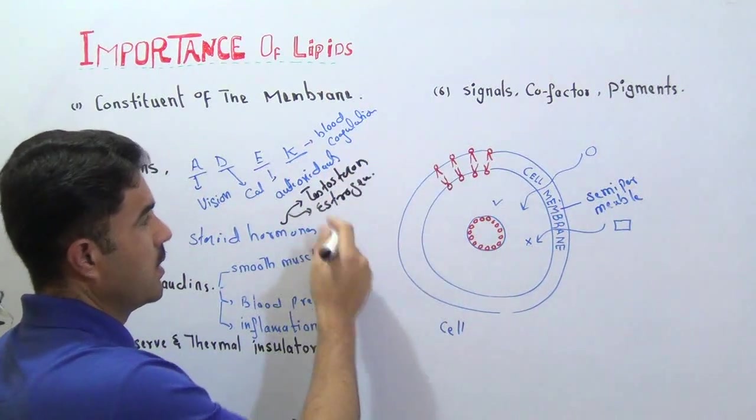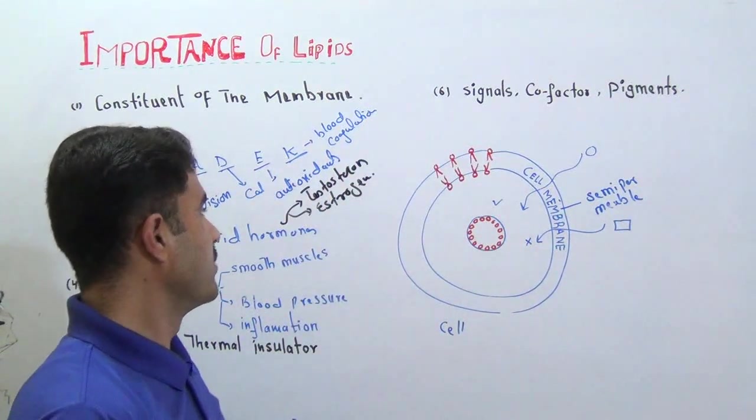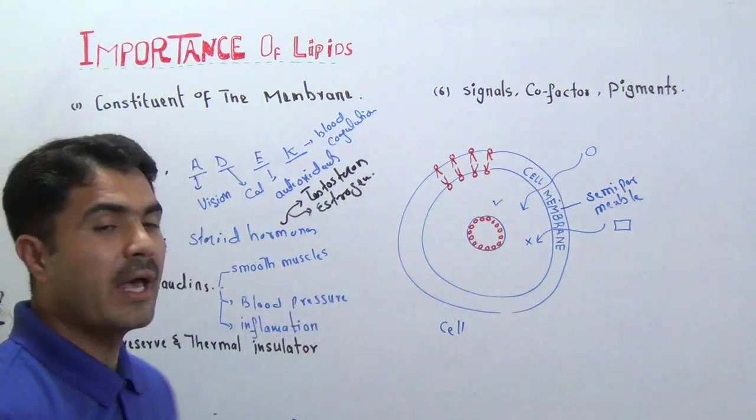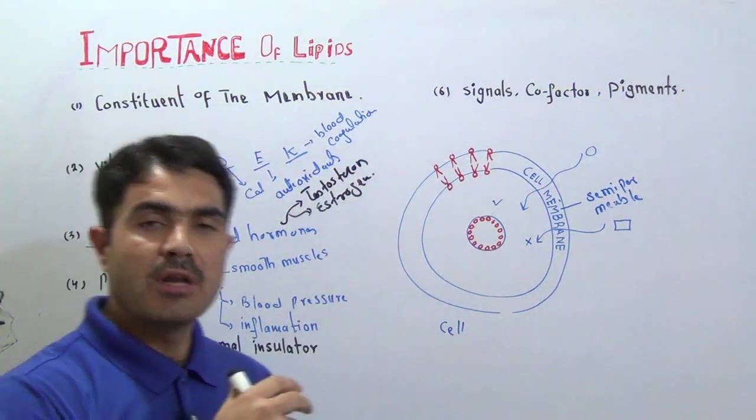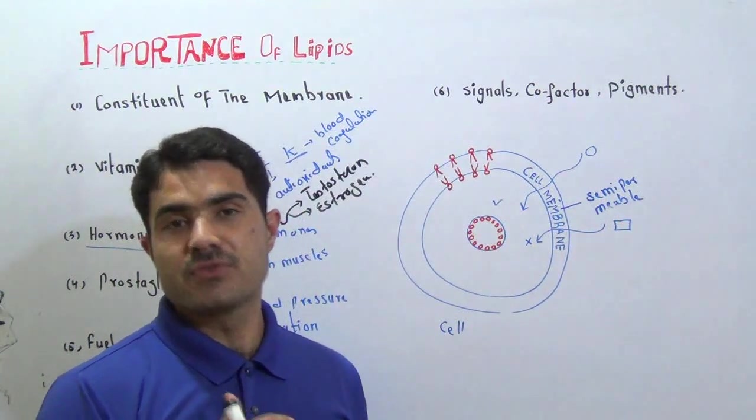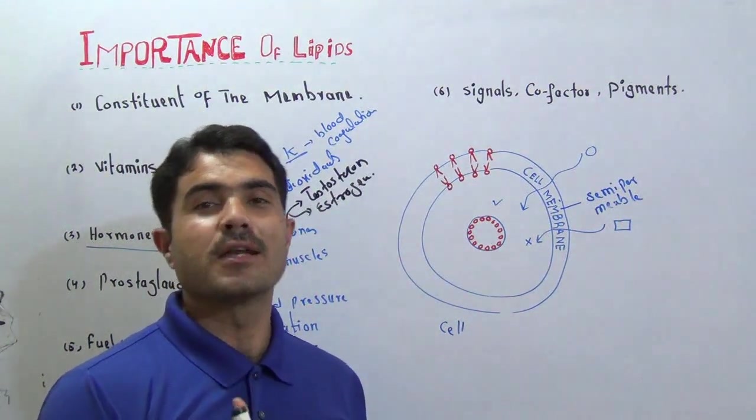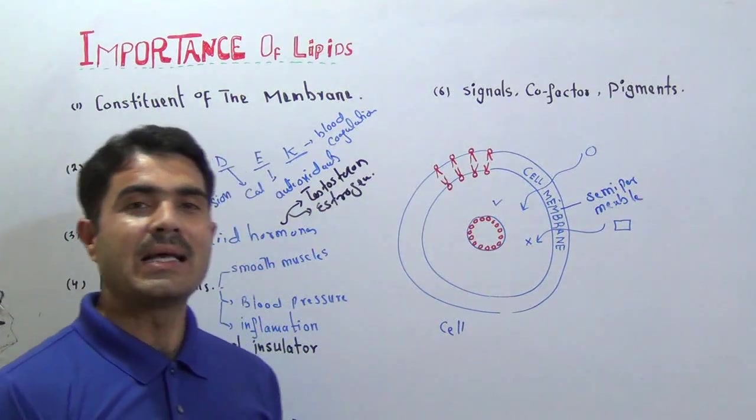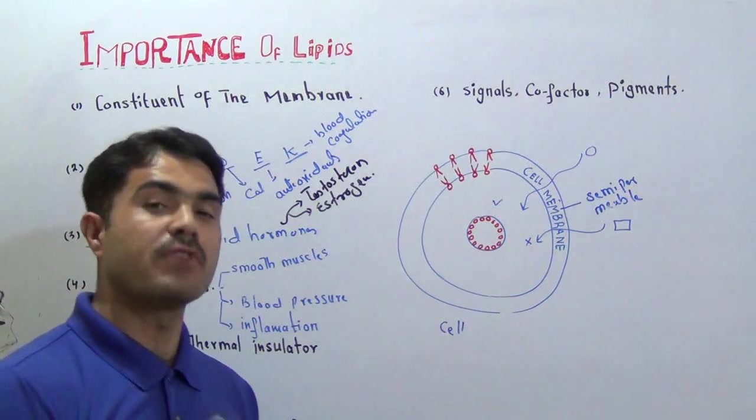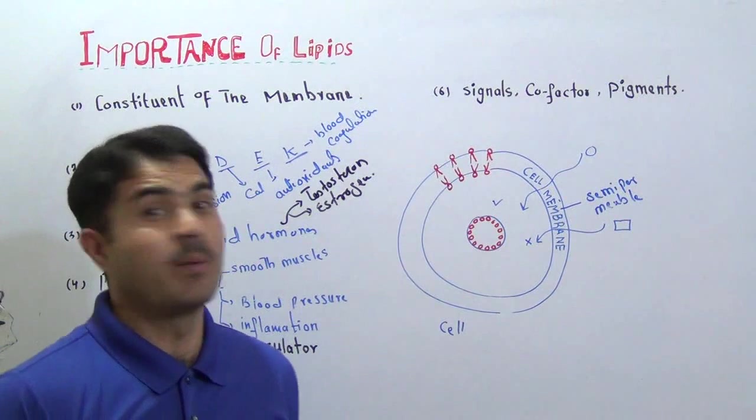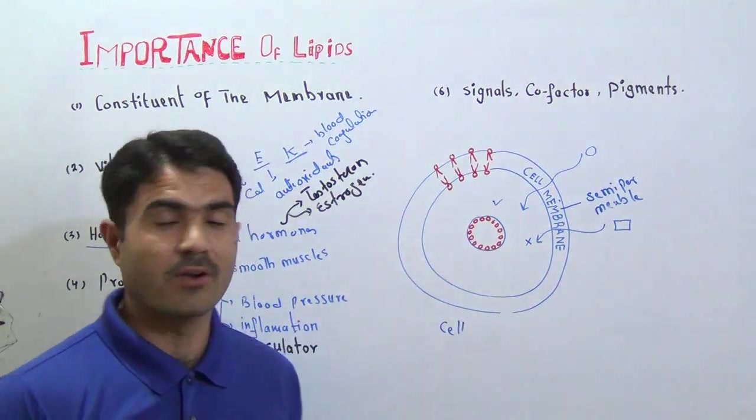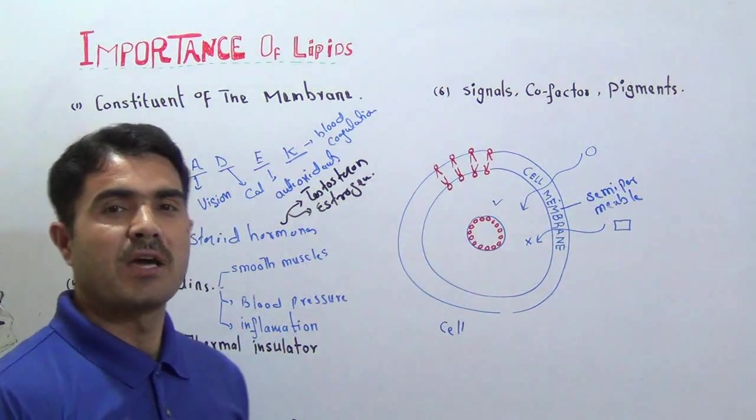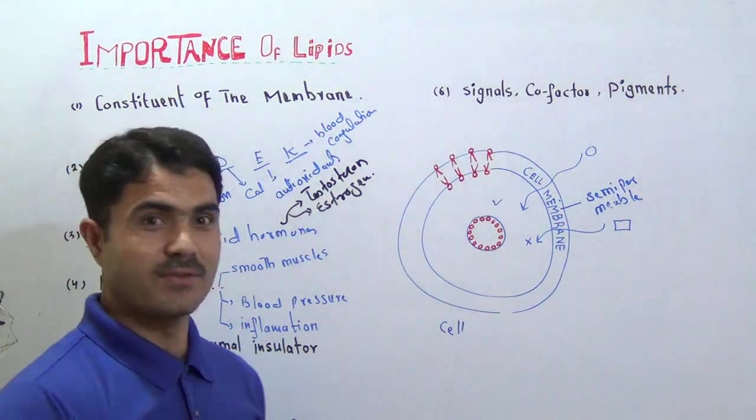Second one is estrogen, the female reproductive hormone. These two hormones help in the development of reproductive structure and reproduction. A lack of these two hormones will lead to infertility, no reproduction, no population. That's why lipids have a very special importance.